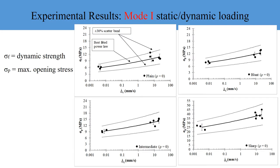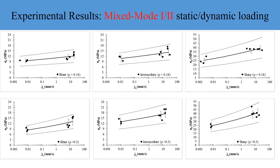The results for mode 1 loading (rho = 0) show the unnotched specimen results in terms of dynamic strength, and all notched specimen results in terms of maximum opening normal stress. The experimental results for the mixed mode cases are also presented: the top charts show results for specimens tested under mixed mode loading with rho = 0.18, and the lower charts show results for notched specimens tested under anti-symmetric four-point bending, which results in rho = 0.3.